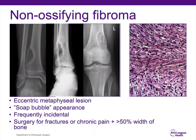One example of a benign latent tumor that's very common, particularly in the pediatric population but also seen in young adults, is a non-ossifying fibroma. Typically these are metaphyseal and eccentric, as you can see from the images shown. It has a soap bubble appearance, which is typically seen in fibrous tumors. They're frequently also incidentally found for other injuries, for example an ankle sprain or a knee sprain that may prompt imaging.